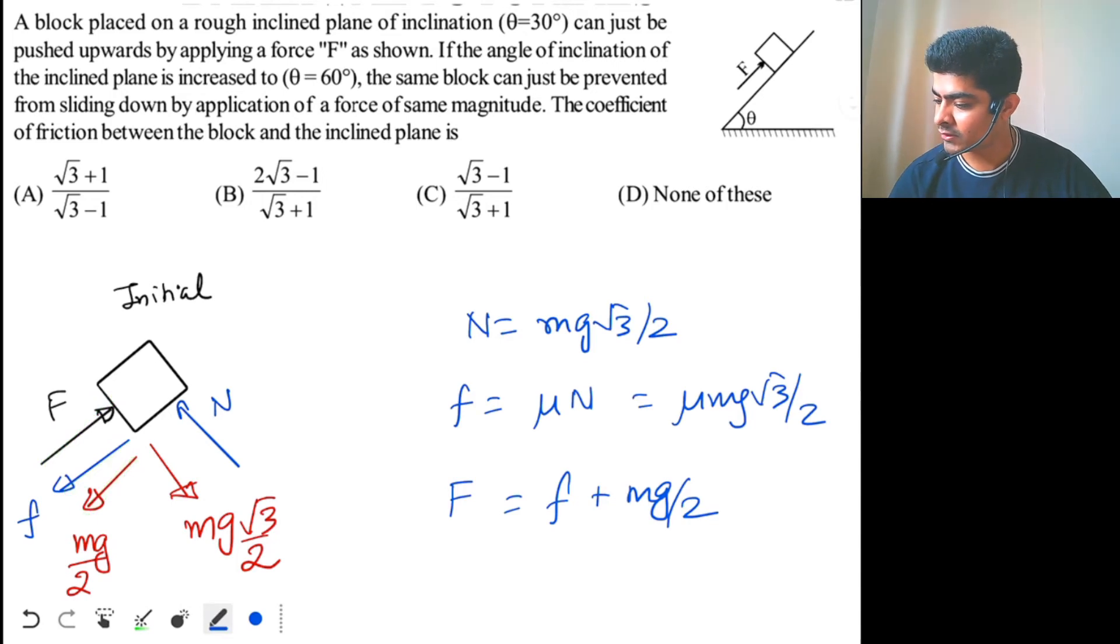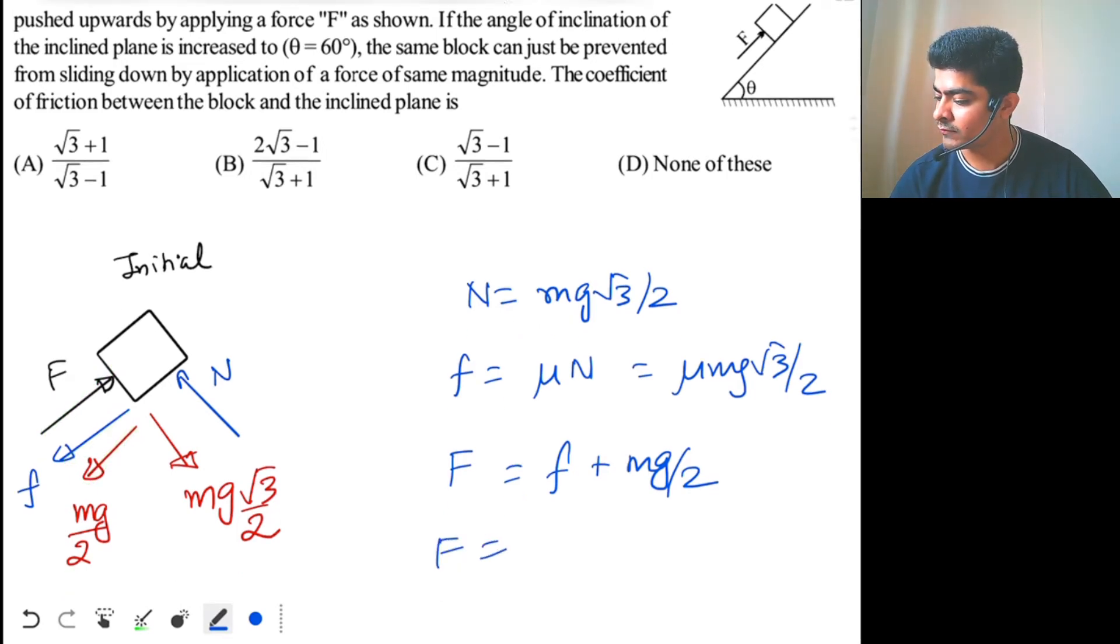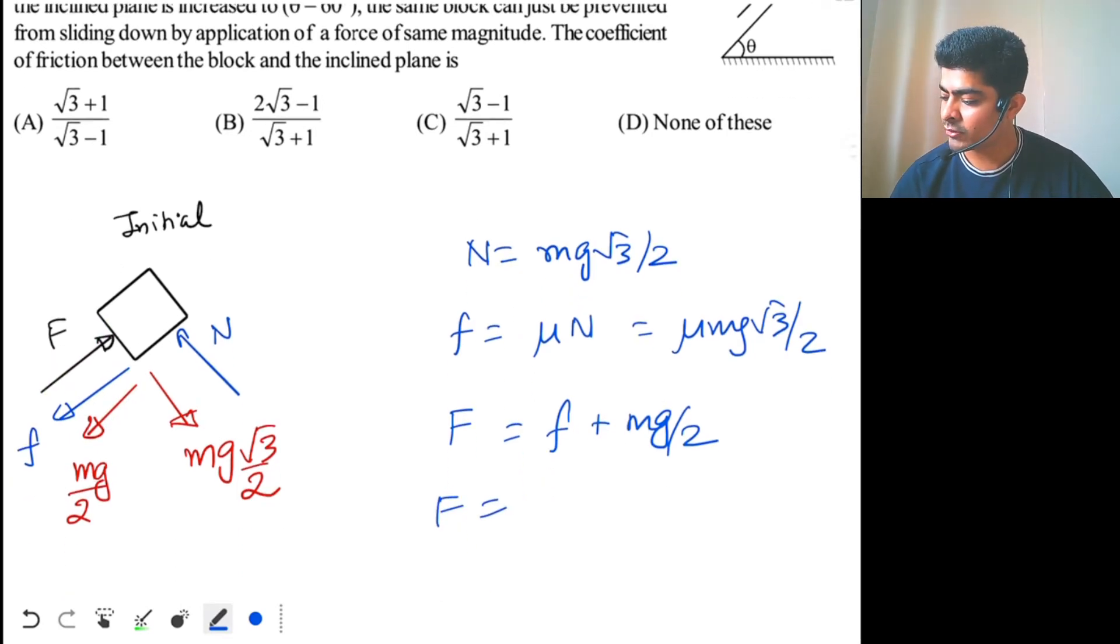Now F, so this will be equal to, F is equal to friction is what? Mu mg root 3 by 2. So mu root 3 plus 1 times mg by 2, this will be the force F. Now, let's come to the second part of the question,